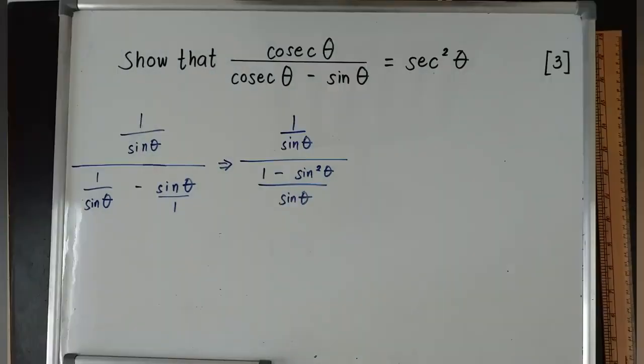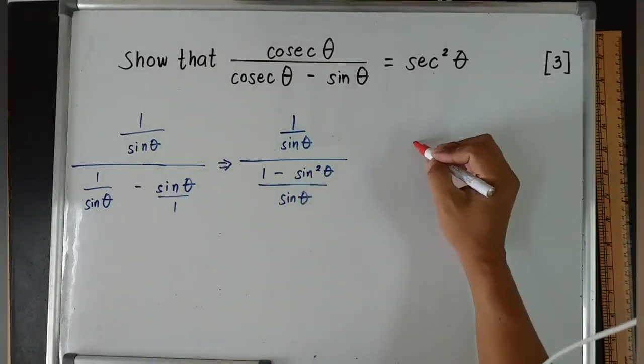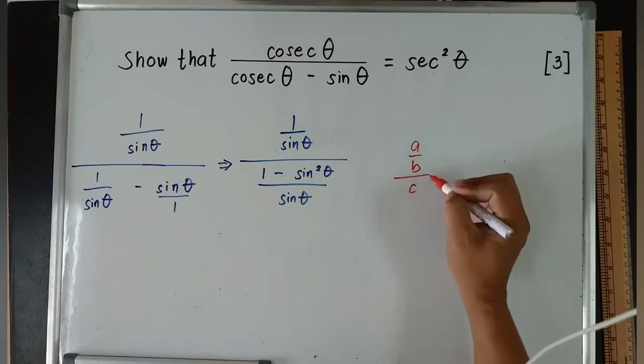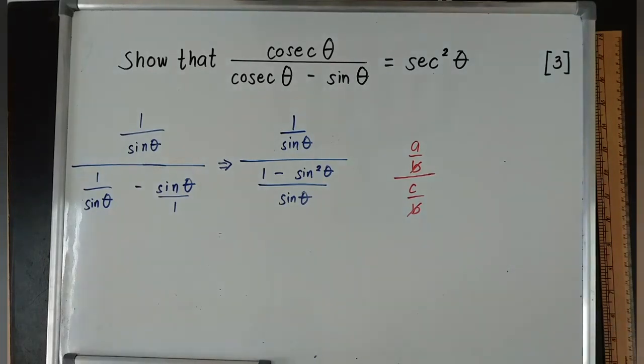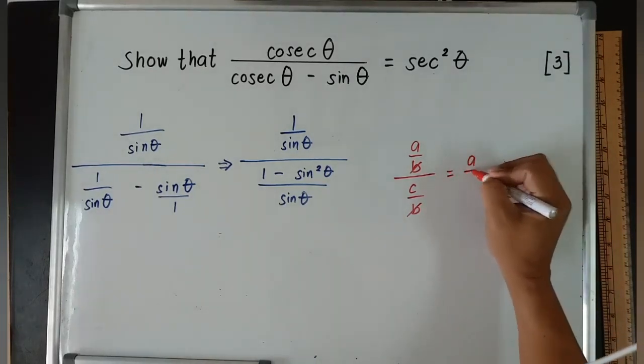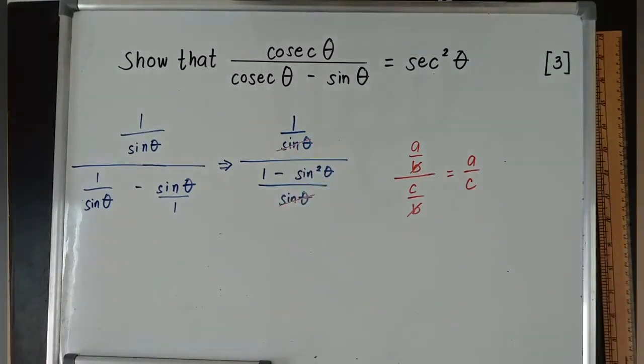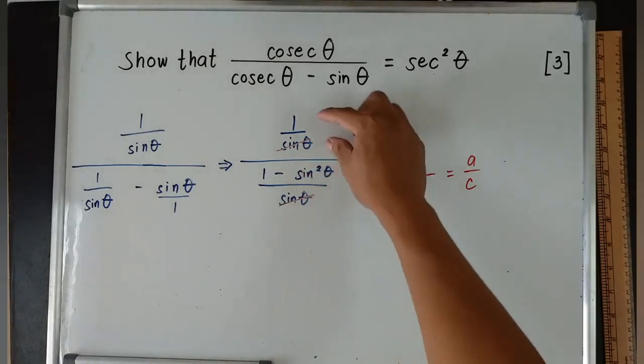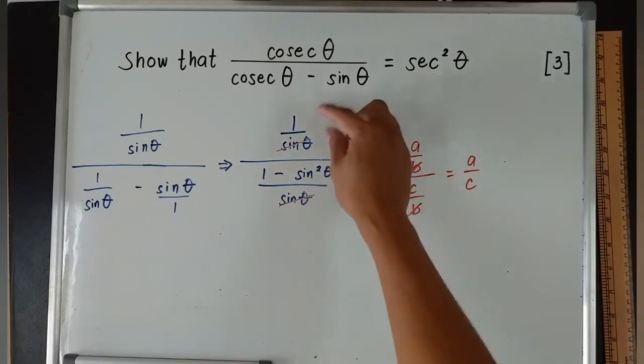Next thing you need to understand is that there is also a rule in fractions. When you are dividing fractions with the same denominator, for example (a/b) ÷ (c/b), you can cancel out the two equal denominators, which is equivalent to a/c. Thus, I can do the same thing with this. The denominator of the numerator is sin θ, the denominator of the denominator is sin θ.